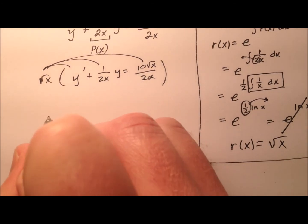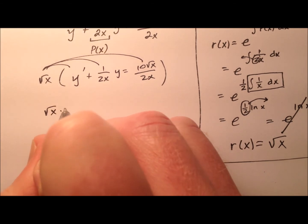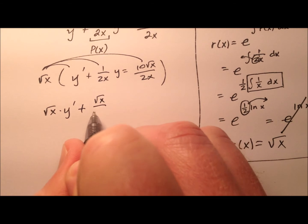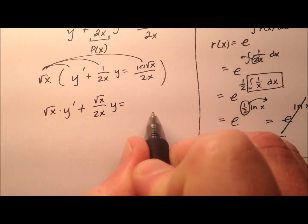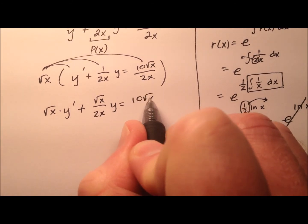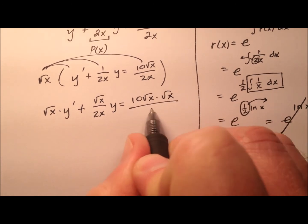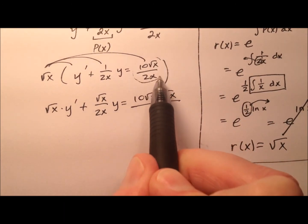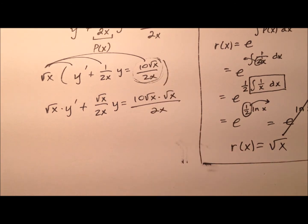So now what it looks like I have is the square root of x times y prime plus the square root of x over 2x times y equals 10 times the square root of x times the square root of x all over 2x. And I didn't simplify this because I wanted to show this whole thing real quick.